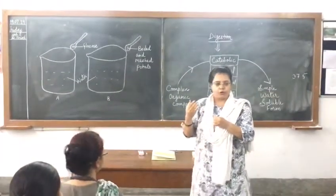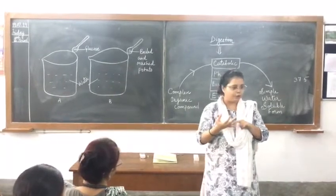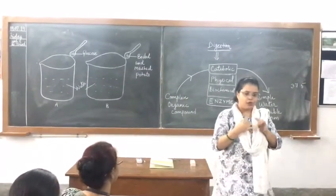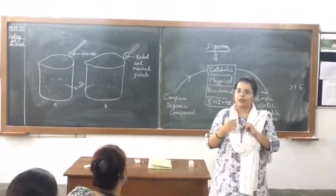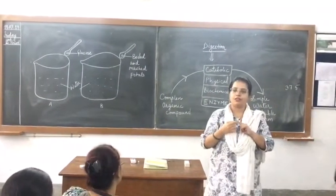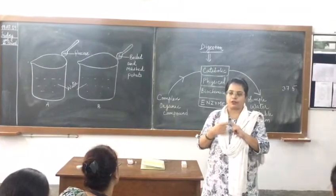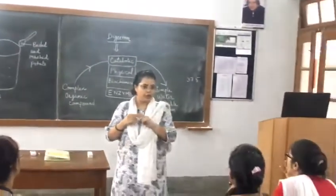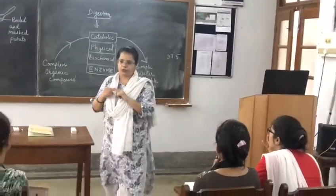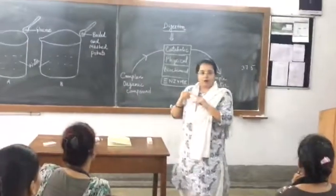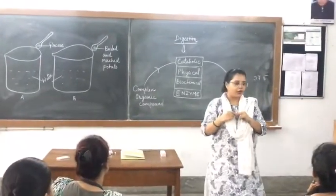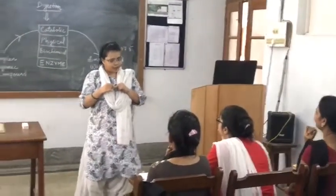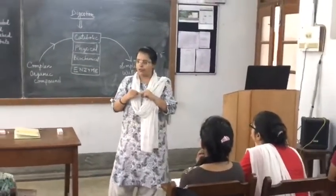So, we have studied respiration and photosynthesis. Let us think about how photosynthesis is which type of process. Anabolic process. And respiration — which type of process? Catabolic process.